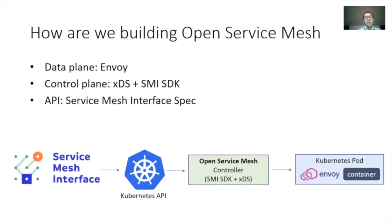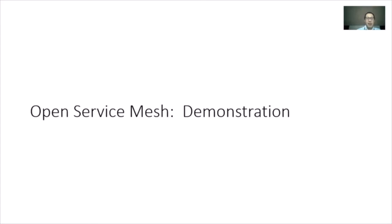To summarize OSM's five components: the proxy control plane where all Envoys connect; the certificate manager abstracting over HashiCorp Vault, CertManager.io, or an internal cert issuer; the endpoint providers giving IP addresses and port numbers; the mesh specification holding SMI policies; and the mesh catalog combining outputs of all those facilities to send configuration to the proxies. The data plane is Envoy, the control plane is Lyft's Go control plane implementing XDS, and the API is SMI.